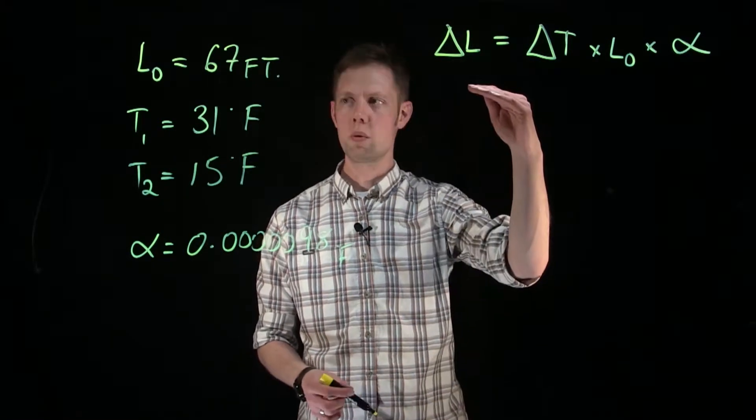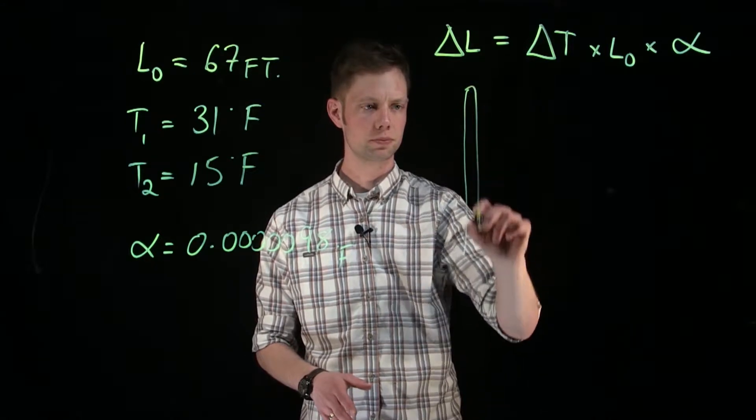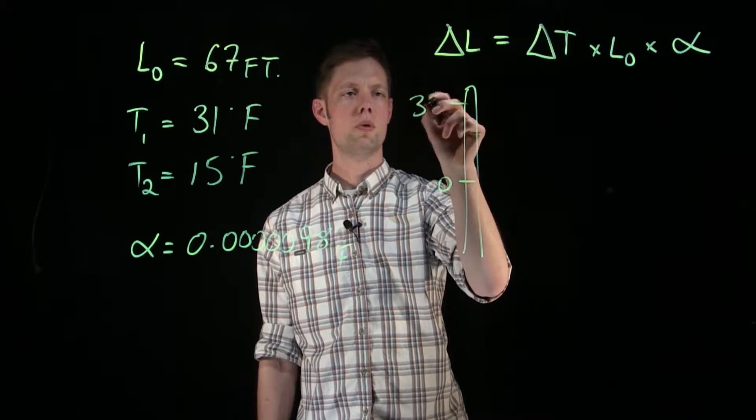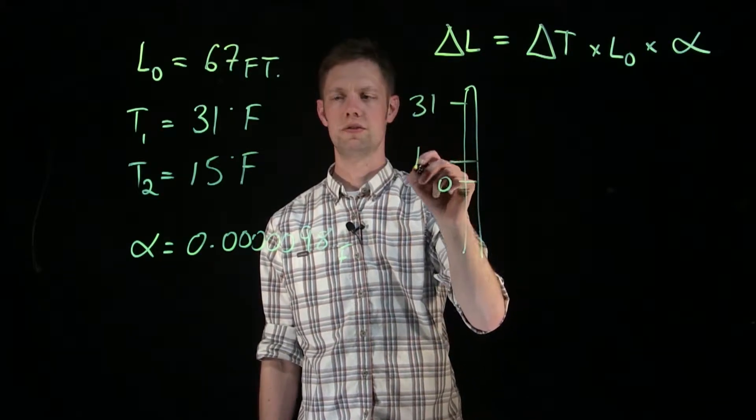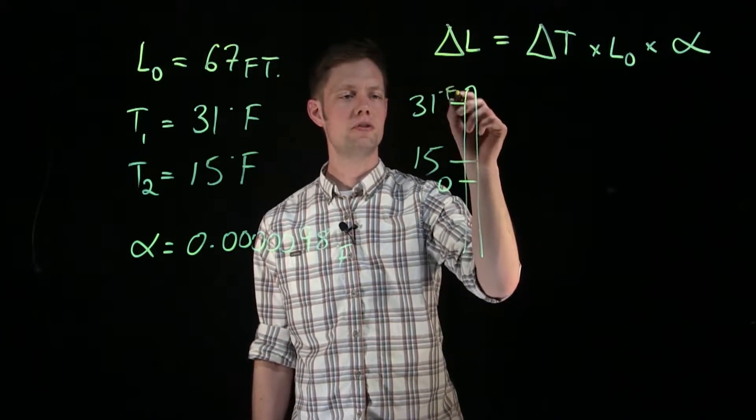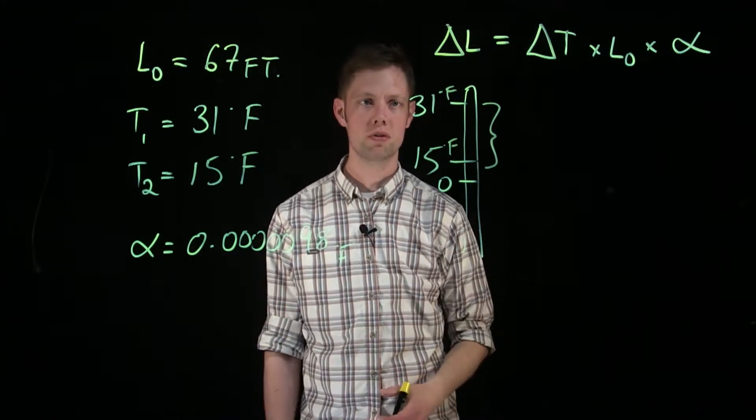So initially, we're at 31 degrees Fahrenheit. If we were to draw this on a thermometer or a scale, we've got 0 degrees there, 31 up here, and it comes down to 15, not to scale obviously. So 31 degrees Fahrenheit down to 15 degrees Fahrenheit. This amount of change is all we're looking for.